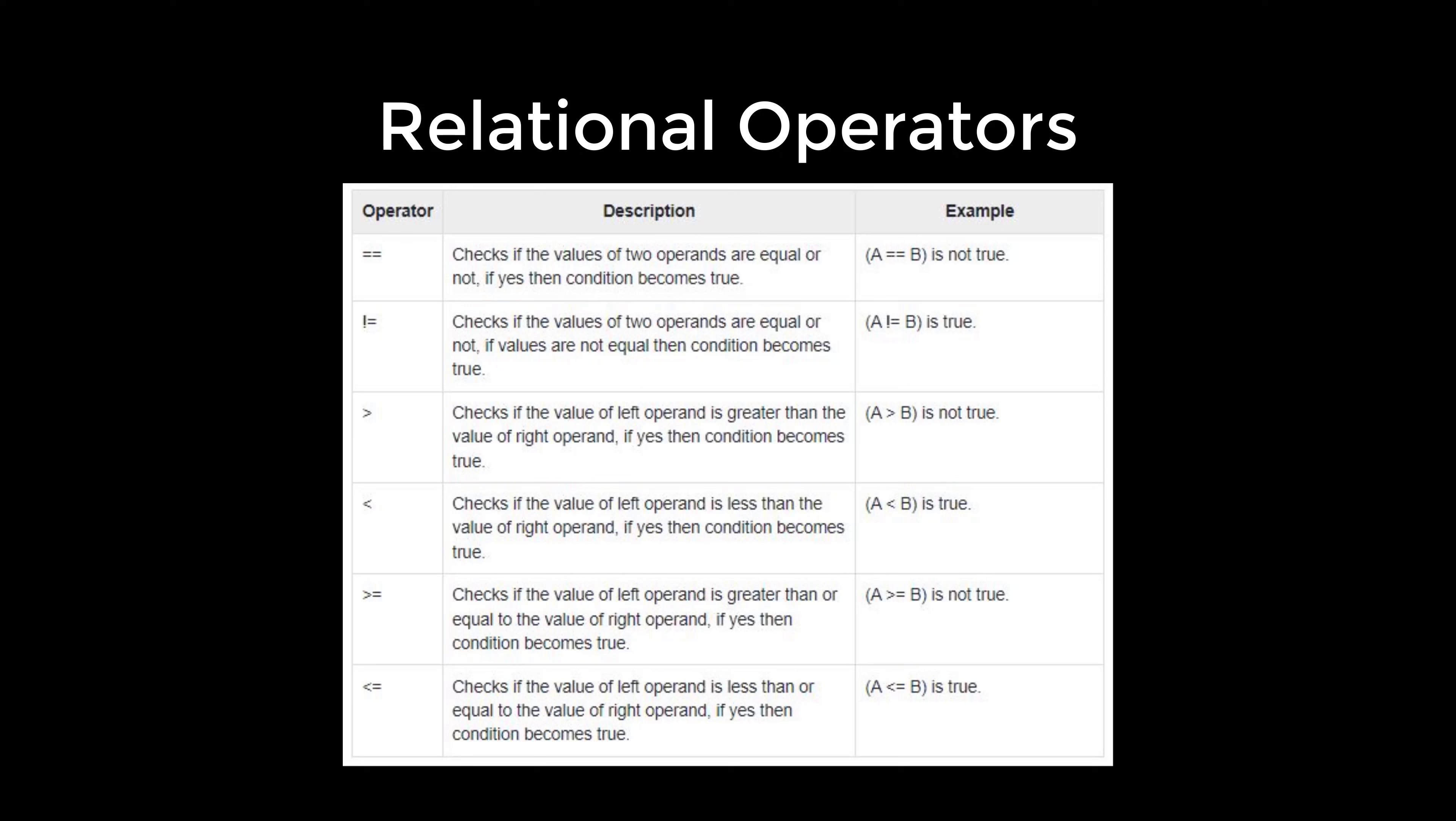For example, double equal: the description is checks if the values of two operands are equal or not. If yes, then condition becomes true. That is example: A equals equals B.